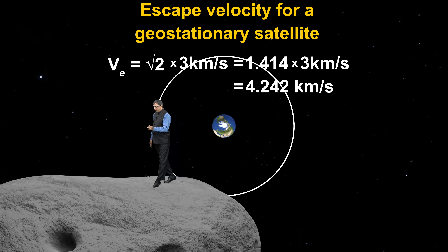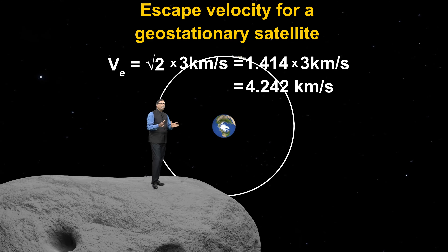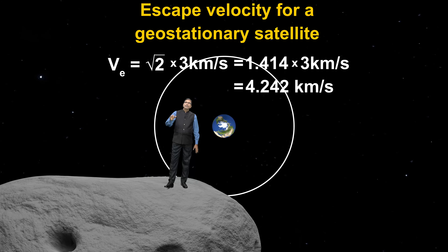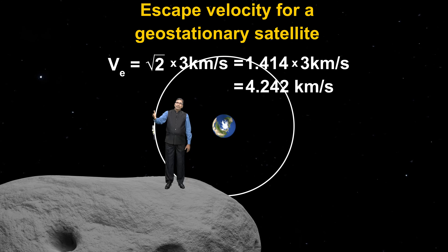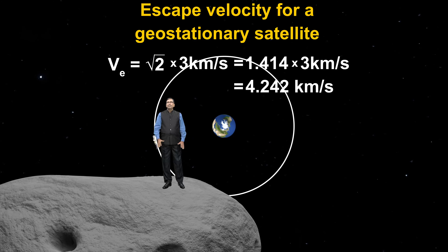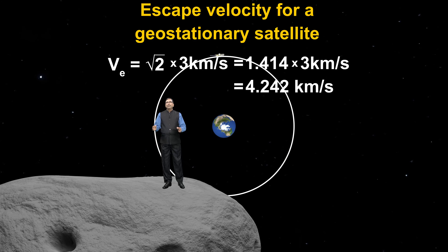So we have explained the kinetic energy of any satellite, the potential energy, and the total energy. We showed that the total energy of any satellite in its orbit is less than at infinity. To escape, we need to give it some energy — that is the binding energy, which is also the escape energy. And for the escape energy, we found the escape velocity. In this way, the topic of satellite energy, binding energy, escape energy, and escape velocity is complete.